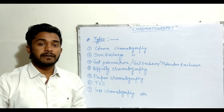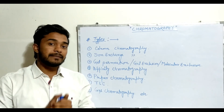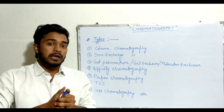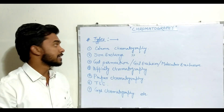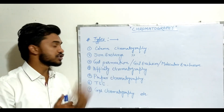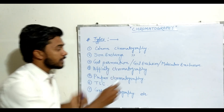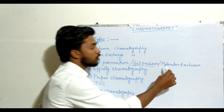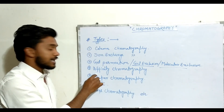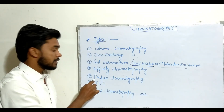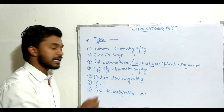Types of chromatography: on the basis of the stationary phase, mobile phase, and the type of mixture, we have different kinds of chromatography. These include column chromatography, ion exchange chromatography, gel permeation — also known as gel exclusion chromatography or molecular exclusion chromatography — affinity chromatography, paper chromatography, thin layer chromatography, and gas chromatography.